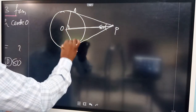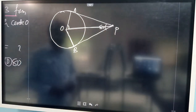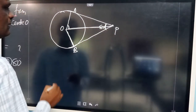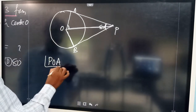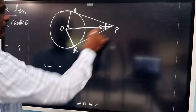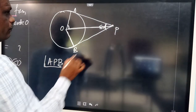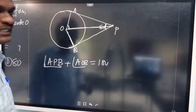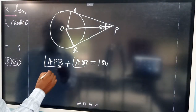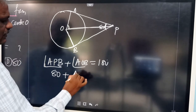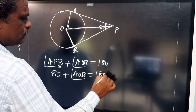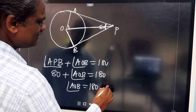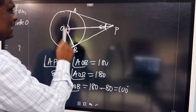To find angle POA, we join O to P. Since the two right angles in the quadrilateral sum to 180°, angles APB and AOB are supplementary. So angle APB + angle AOB = 180°. With angle APB = 80°, angle AOB = 180° − 80° = 100 degrees.